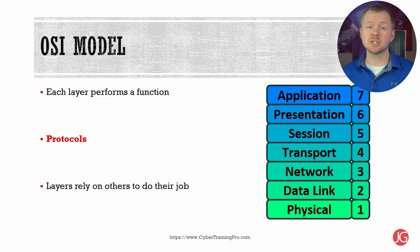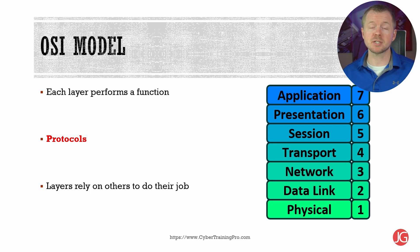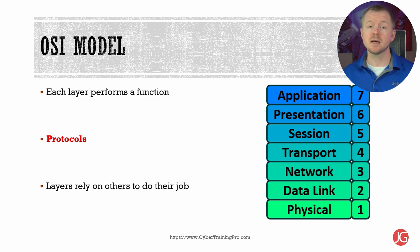Each layer relies on the layers above it and below it to do their job, similar to what you might see in an assembly line making a car or a burrito at a restaurant like Chipotle. The seven different layers of the OSI model are the application layer, the presentation layer, the session layer, the transport layer, the network layer, the data link layer, and the physical layer.